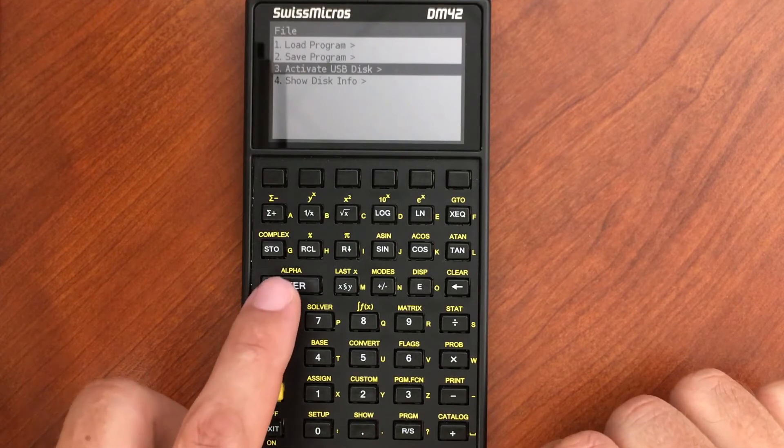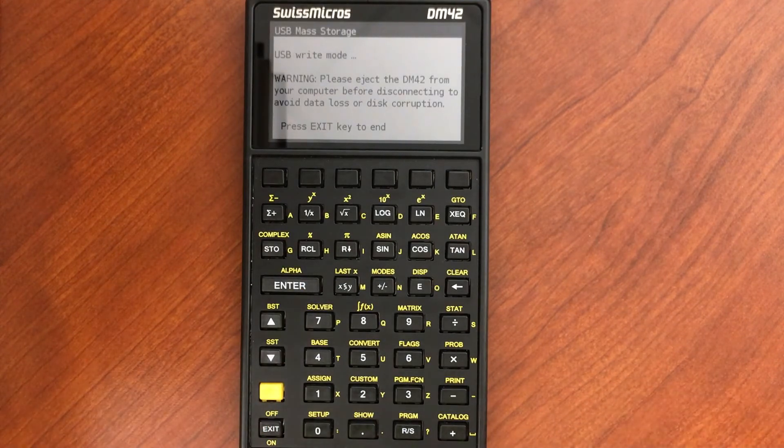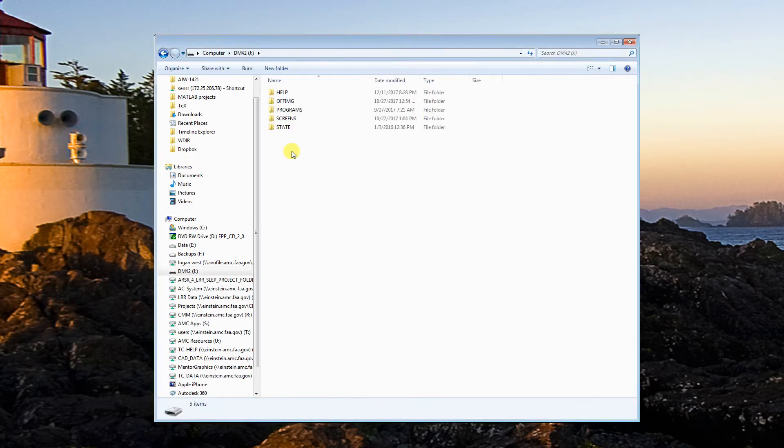Now I can activate the USB disk. If we go over to the computer here, you'll see on the computer that we have the calculator connected as a drive. If I click on that, open it up, you'll see the folders that are on the calculator.